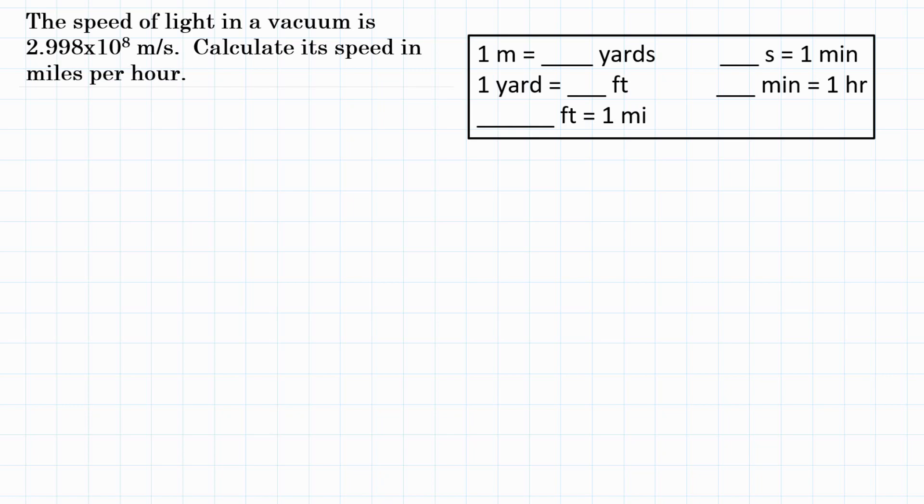So this is a dimensional analysis problem where we will be changing the speed of light from 2.998 times 10 to the 8th meters per second to some number miles per hour.